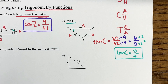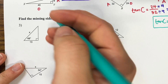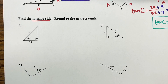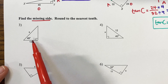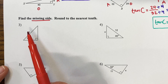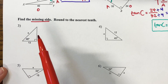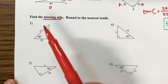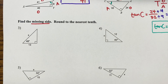For numbers 3 through 8, it's asking us to find the missing side of our right triangles. At the beginning of this unit, we were finding the missing sides using the Pythagorean theorem, but remember, that only works if it gives you two sides and you're trying to find the third. Now it's giving us an angle and a side, so we have to use our trigonometric functions — sine, cosine, and tangent — to find the missing side.